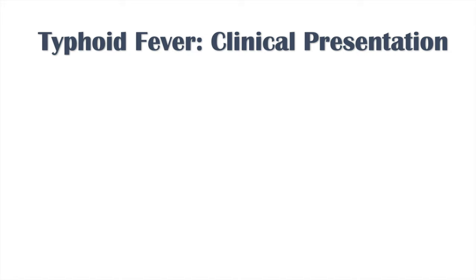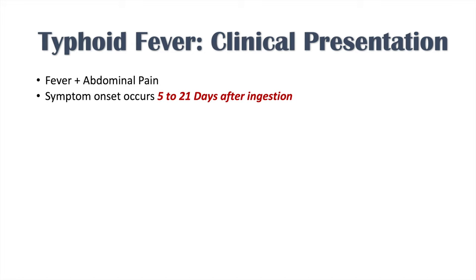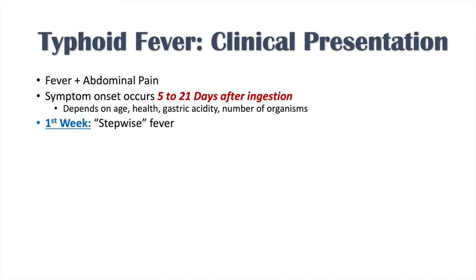The clinical presentation of typhoid fever can be summed up by fever and abdominal pain. Symptom onset occurs roughly five to twenty-one days after ingestion, depending on the patient's age, health, gastric acidity, and number of organisms ingested. In the first week of infection, we see a stepwise fever — a gradual, step-like increase where the temperature bumps up to a higher level, plateaus, then bumps up again.